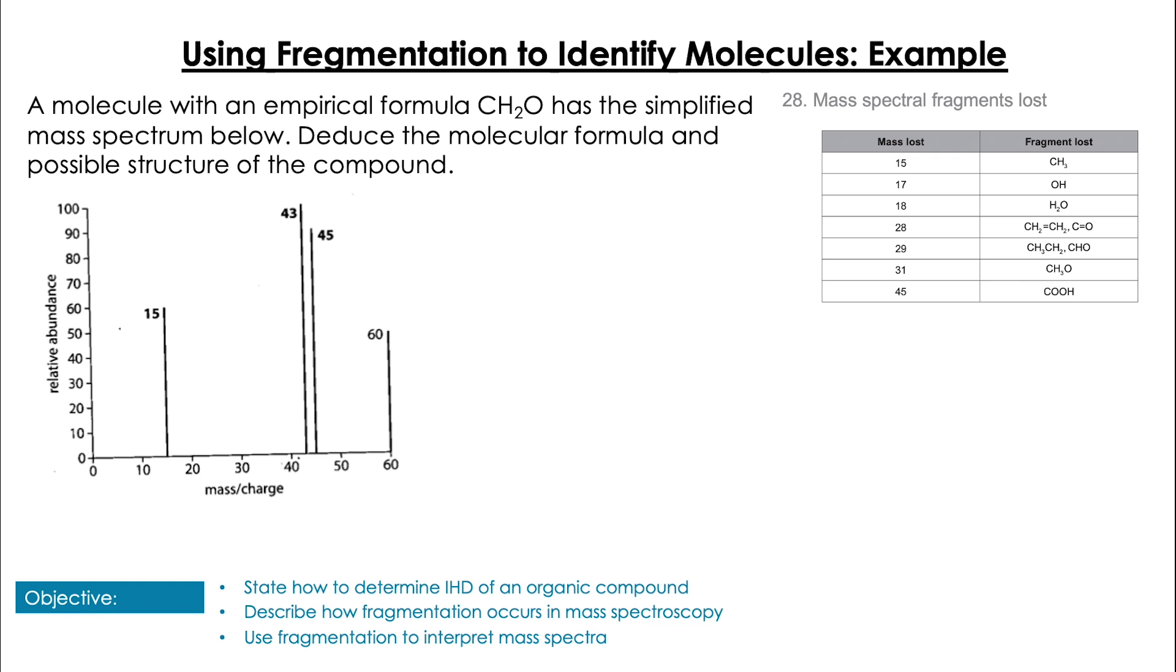So our first port of call is to have a look at our fragments list to see if we can find any clues about the structure. So upon inspection, we see the mass lost of 15, which is always indicative of a CH₃ group, and we have a molecular ion peak of 60, along with fragments around 45. So the empirical formula of this compound total molecular mass would only be 30, so we know, going back to doing empirical formula from unit 1, that the molecular formula must be twice that of the empirical formula, aka C₂H₄O₂.